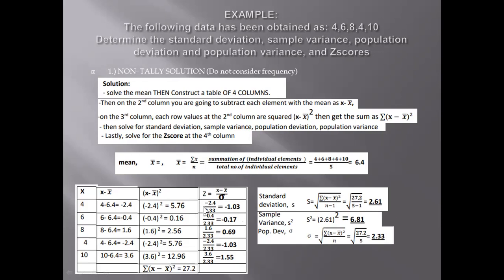For element 4, the z-score is negative 2.4 divided by the population deviation 2.33, which gives us negative 1.03. For element 6, negative 0.4 divided by 2.33 gives us negative 0.17. For element 8, 1.6 divided by 2.33 gives us 0.69. For the second element 4, negative 2.4 divided by 2.33 gives us negative 1.03. And for element 10, 3.6 divided by 2.33 gives us 1.55.